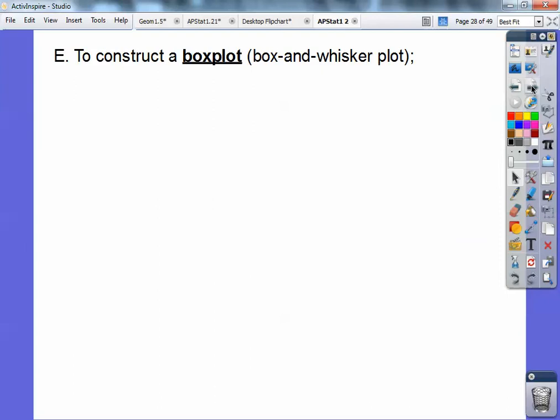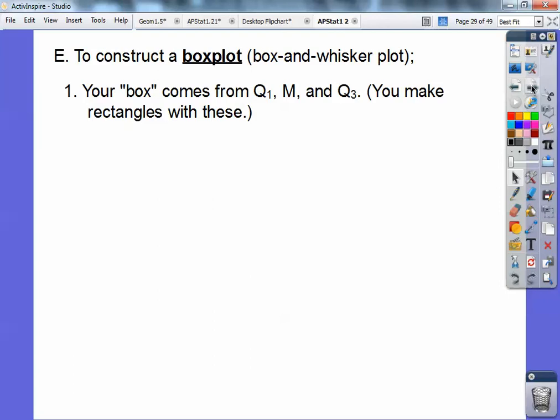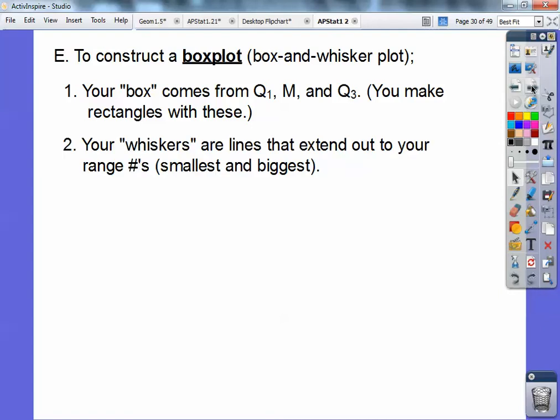All right. To construct a box plot, old school box and whisker plot, your box comes from your quartiles and your median. You make rectangles with those, and your whiskers are lines that extend out to the range numbers, the small number and the big number.